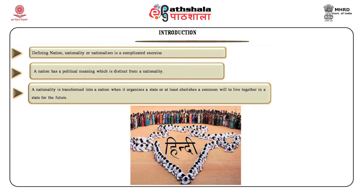On the other hand, Oommen defines nationality as a collective identity that people of a nation acquire by identifying with a nation. This view equates nationality with citizenship. However, nationality is often used as a synonym for ethnicity. In this sense, various cultural groups constituting a nation are described as nationalities. Anthony Smith defines nation as a named human population sharing a historic territory, common myths and historical memories, a mass public culture, a common economy and common legal rights and duties for all members. However, Smith's definition of nation is criticized on the ground that it does not distinguish a nation from an ethnic group. Barrington points out that the idea of territory is central to all definitions of a nation and is a distinguishing feature between nation and other social categories such as an ethnic group.